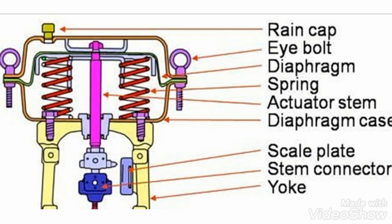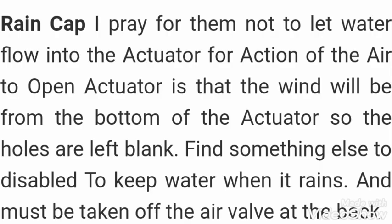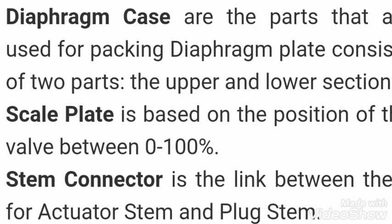There are some other parts: the rain cap, the eye bolt for holding the actuator when we want to remove it, and the stem connector. The rain cap is used to protect the actuator from outside air, because there is a hole left open. When there is no air, the air on the upper side of the diaphragm needs to be released because the spring creates tension and that trapped air would cause restriction. So there is a hole to drain that air, and this is called the drain cap.